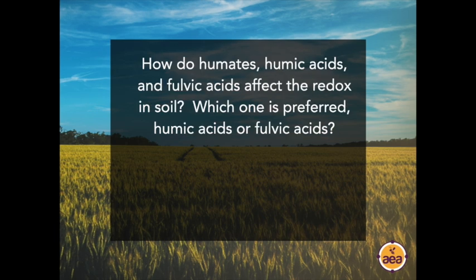How do humates, humic cells, and fulvic acids affect the redox in the soil? Which is preferred, humic or fulvic acids? The answer is both — we prefer both. The way these humic substances and organic matter influence redox values is they increase redox poising. Similar to pH buffering — a soil's capacity to buffer rapid swings in pH — the same is true of redox poising. Really healthy soils with high organic matter levels and abundant microbial activity have a very high redox poising effect, where rapid fluctuations don't happen nearly as rapidly anymore. The soil is much more stable, and therefore the plant is much more stable as well.